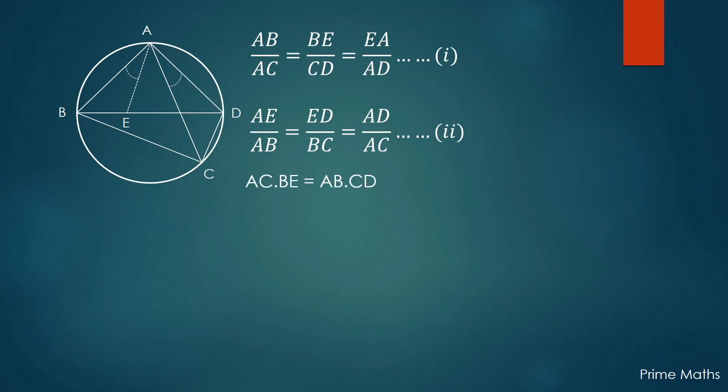And from equation 2, using the last two ratios, AC times ED is equal to AD times BC.